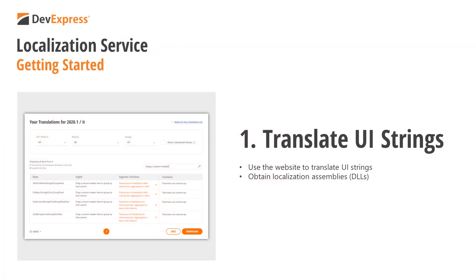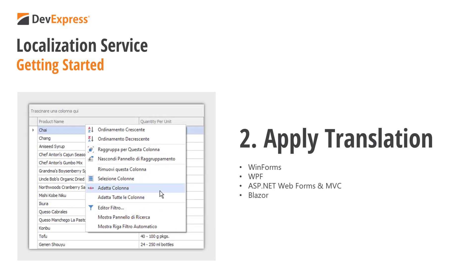First, the video shows how you can use the website to specify translations for DevExpress UI elements. After you specify all necessary translations, you can download localization assemblies that you will later use in your projects. The video will then show you how to apply the generated translations to projects that target different platforms: WinForms, WPF, ASP.NET WebForms or MVC, and finally Blazor.